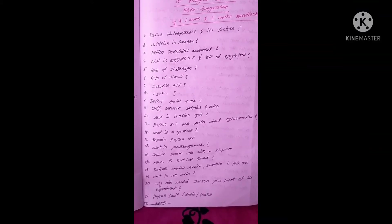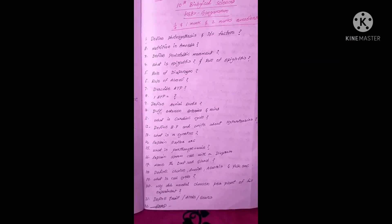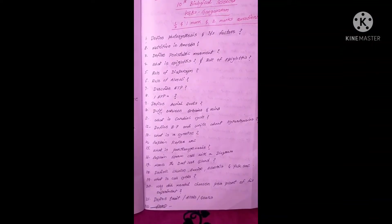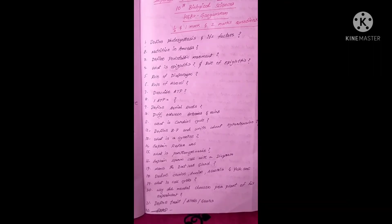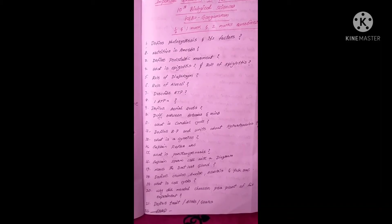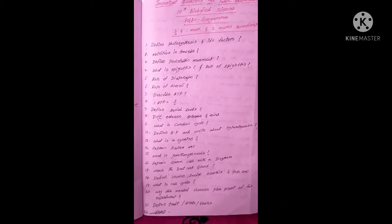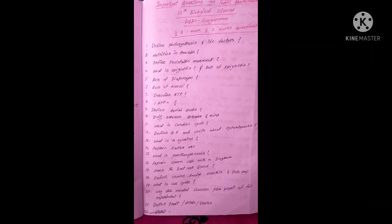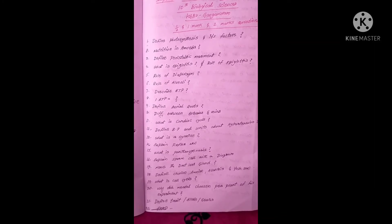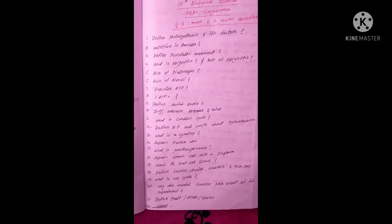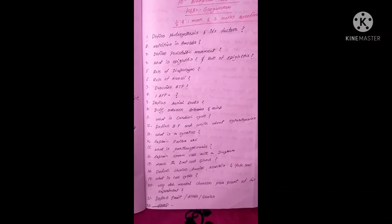Explain reflex arc. What is parthenogenesis? Explain sperm cell with a diagram. The seventeenth question: name the ductless gland. Define chorion, amnion, allantois, and yolk sac in embryonic developmental stages. What is cell cycle? What are the phases present in the cell cycle? The twentieth question: why did Mendel choose a pea plant for his experiment? Define trait, allele, or genes.